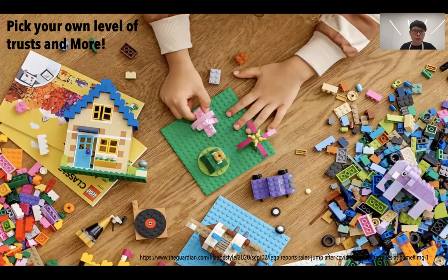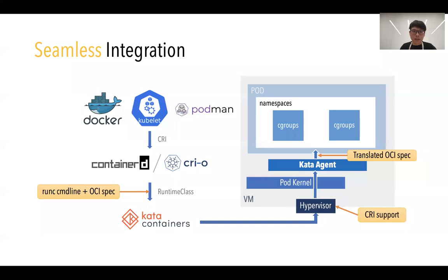Besides building Lego-like two-way sandboxes, we are also considering seamless user experiences. Kata containers has already supported integration with the cloud-native ecosystem — it has integrated with CRIs like containerd and CRI-O. It takes the runc command line and OCI specs as input and abstracts the hypervisors with the CRI spec. So we can simply use tools like Docker, Kubelet, and Podman to create virtualization-based containers just like normal containers.